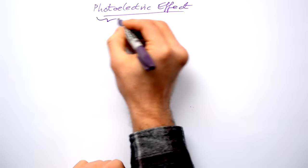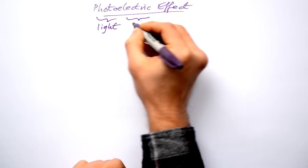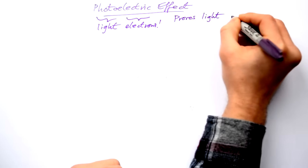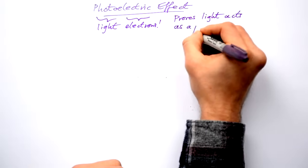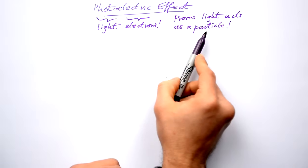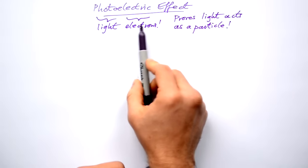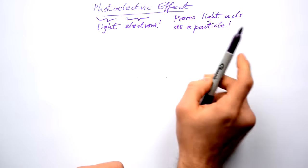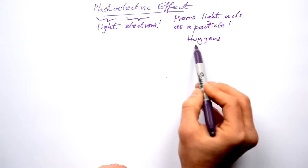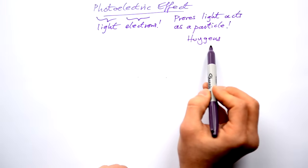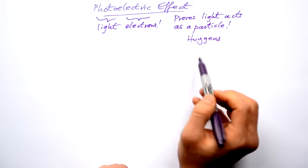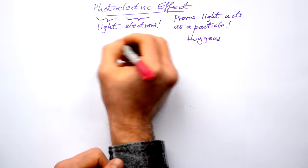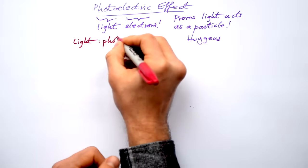The photoelectric effect involves two things: light and electrons. It's actually the main piece of evidence for the quantum theory of light — that light acts as a particle. Isaac Newton was the first to propose a quantum theory of light, thinking light traveled in little packets called corpuscles with mass. Then Huygens came along and said it acts like a wave, as seen with diffraction. But the photoelectric effect is the main evidence that light acts as a particle and comes in discrete packets of energy, which we call photons.